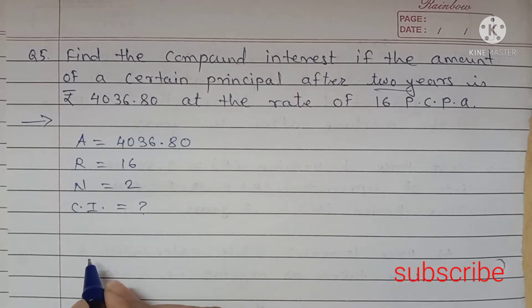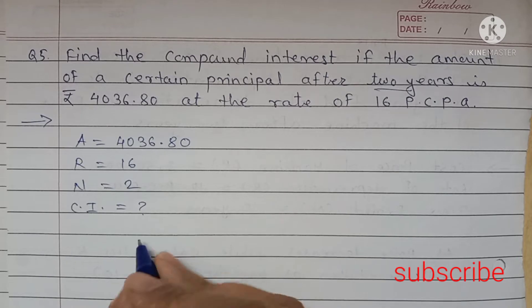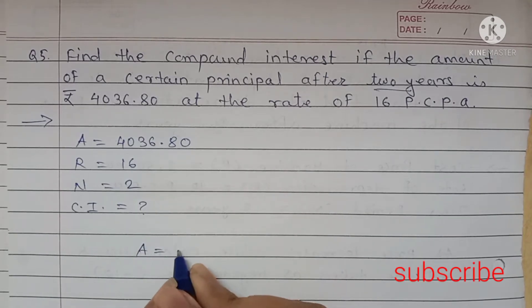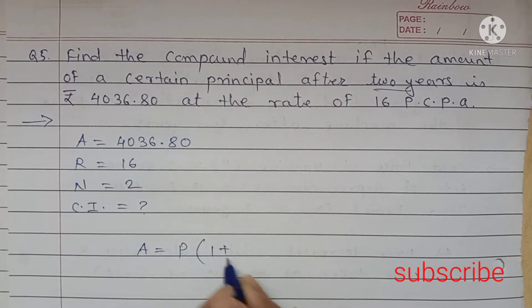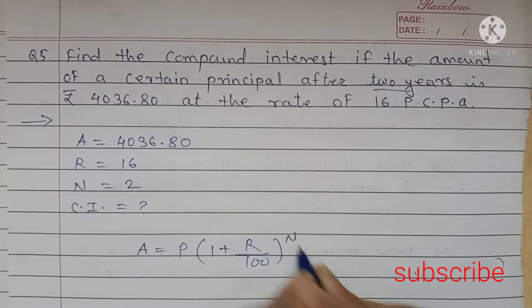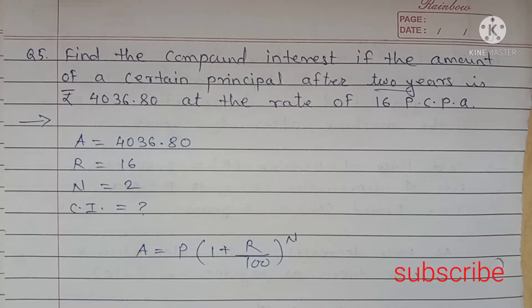For finding compound interest, first we will find out the value of P. A is equal to P into bracket 1 plus R upon 100 bracket raise to N.